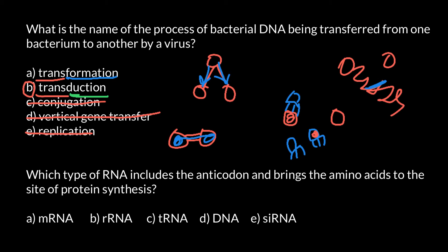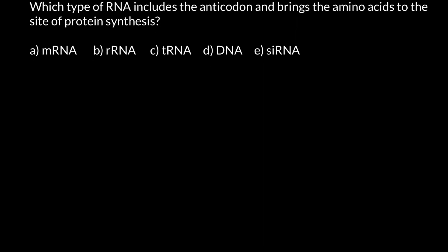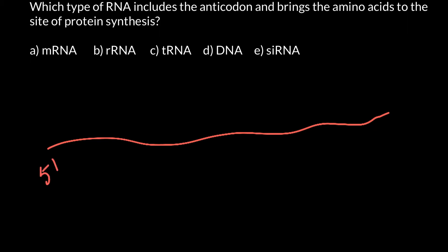Next question: which type of RNA includes the anticodon and brings the amino acid to the site of protein synthesis? We have four or five variants. The first variant is messenger RNA. Messenger RNA has a five-prime end and a three-prime end, and always grows from five-prime to three-prime. Along it we have sites called codons, and one codon consists of three nucleotides — for example, guanine, uracil, and adenine.